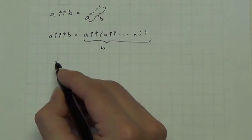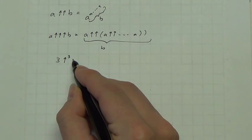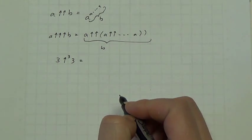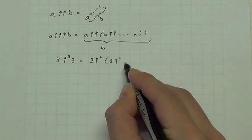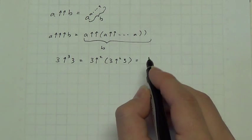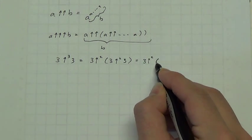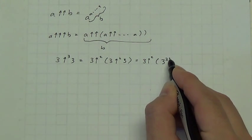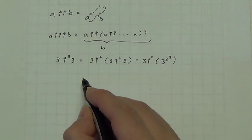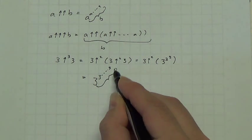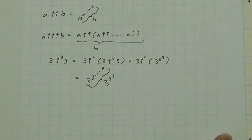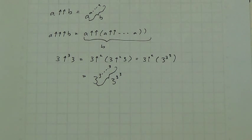Let's see if we can evaluate something like that. Using a superscript to denote the number of arrows, 3 triple up-arrow 3 equals 3 double up-arrow 3 double up-arrow 3, which is a power tower of threes with a height of 3 raised to the 3 raised to the 3. That's a really big number, but it still doesn't get close to some of the numbers we were getting with the Ackermann function in the last video.